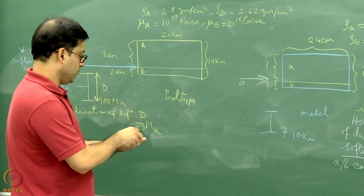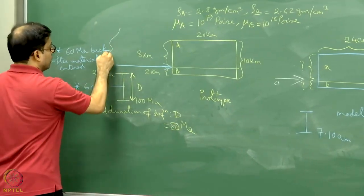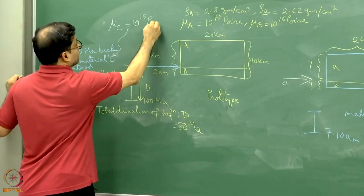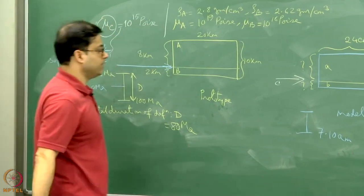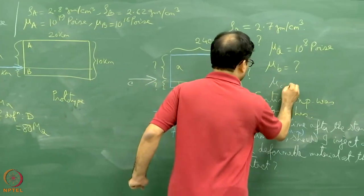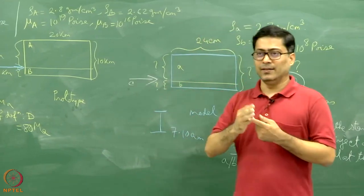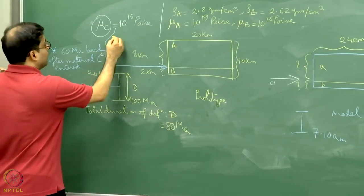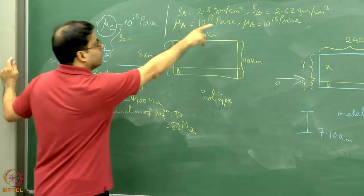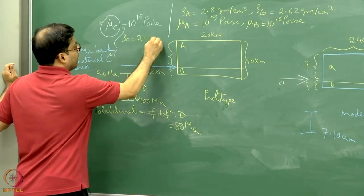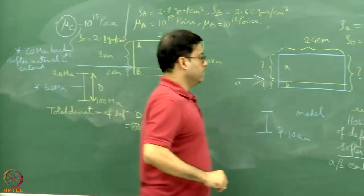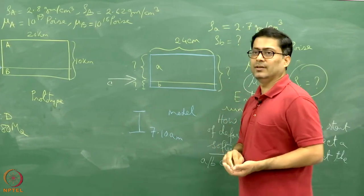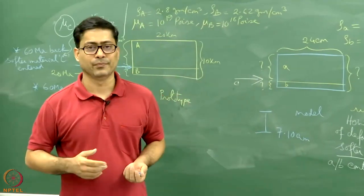Material capital C has a much lower viscosity: mu_C = 10^15 poise. If mu_C is 10^15 poise, how much should small mu_c be? Apply viscosity ratioing. Also, if the density of injected material C is rho_C = 2.1 g/cm³, how much should small rho_c be? Apply density ratioing. Doing this problem will make clear how the principles of analog modeling all work together.